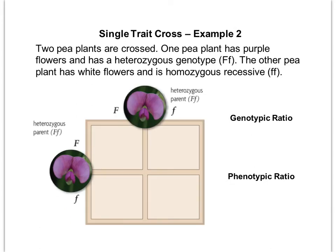Our second example is going to be a monohybrid cross. A monohybrid cross means that both parents are heterozygous — you can see that we've got a dominant allele and a recessive allele for each parent.